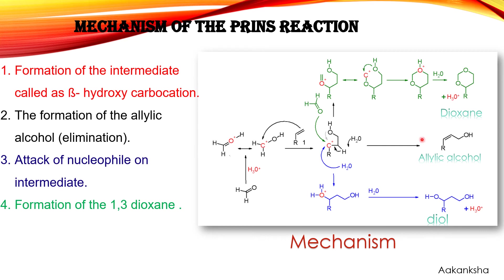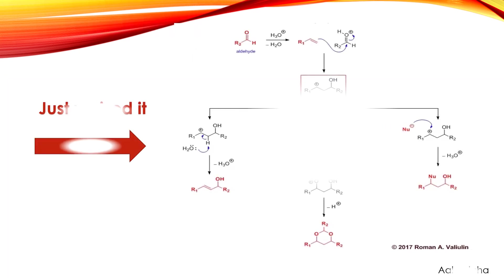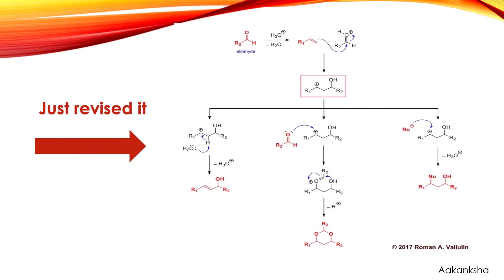The first step in the Prince reaction is the formation of the beta-hydroxy carbocation, which is mainly responsible for forming the dioxane, allylic alcohol, and diol. The allylic alcohol is formed by elimination. Note: the formation of the allylic alcohol can be confused with the Ene reaction, but they are quite different.